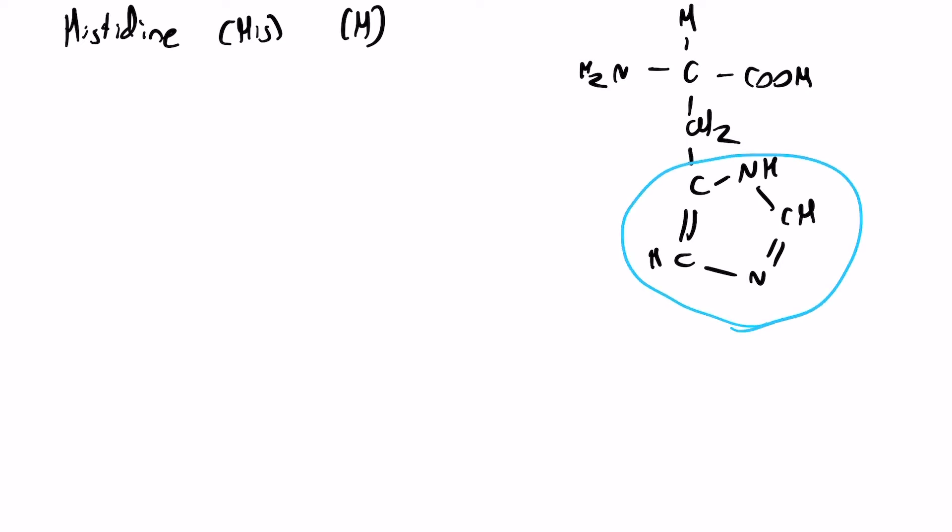So this is the group here. This is called the imidazole group. Let's write that out here. Imidazole group. And basically histidine is found in a lot of active sites. So it is positively charged at physiological pH, but the imidazole group tends more towards being a base. But it actually is amphoteric.